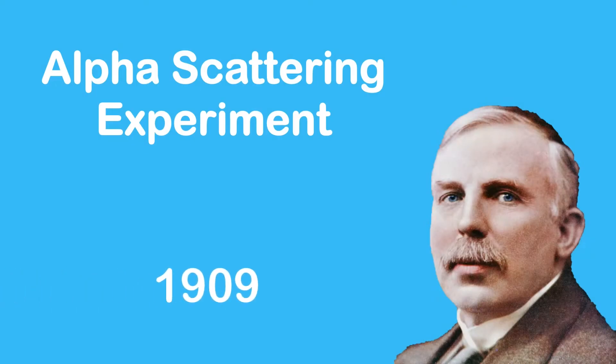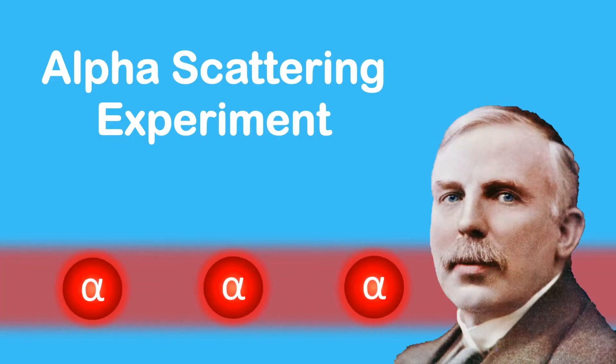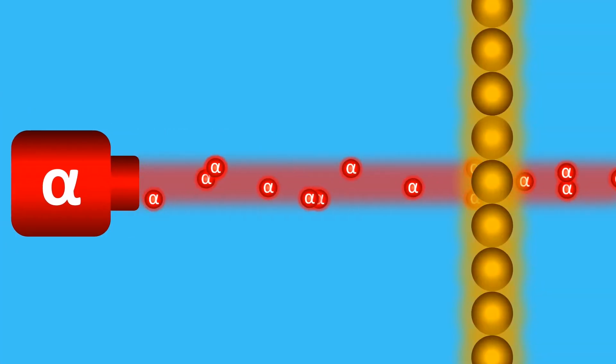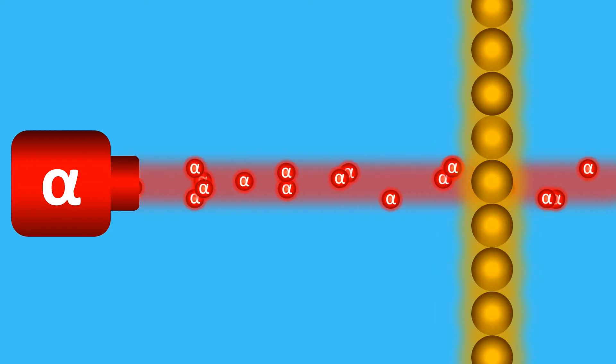But 12 years later, Ernest Rutherford proved this model wrong in his famous alpha scattering experiment. He fired positive alpha particles at a thin sheet of gold atoms to see how much the alpha particles were deflected or scattered.